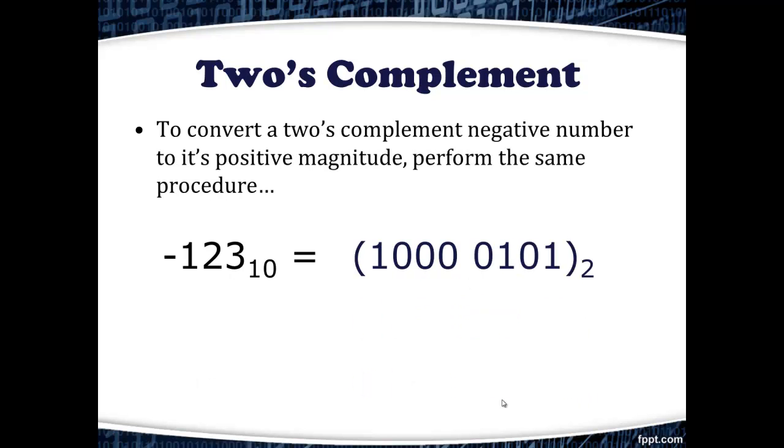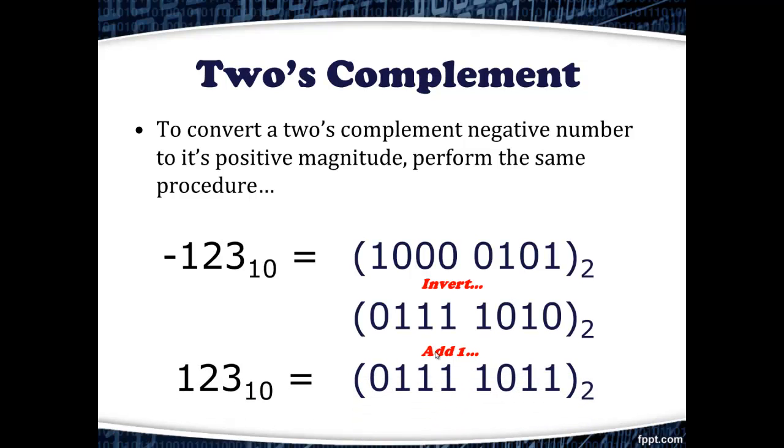The door swings both ways. To convert a two's complement negative number to its positive magnitude, we perform the same procedure. Beginning with our 8-bit sequence for negative 123, we invert the bits, and then we add 1. The value that we get, the 8-bit value, gives us the positive magnitude of that number, 123 in base 10.